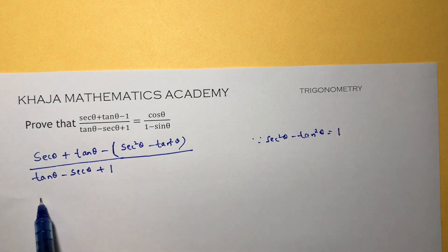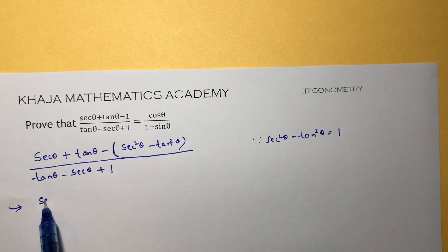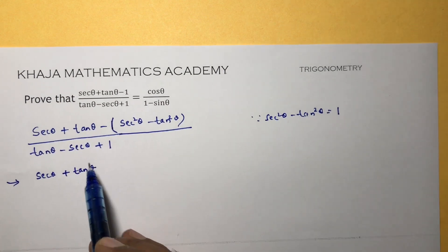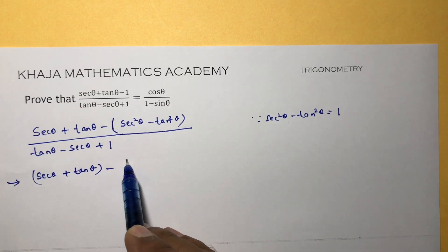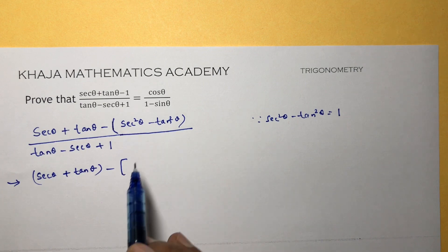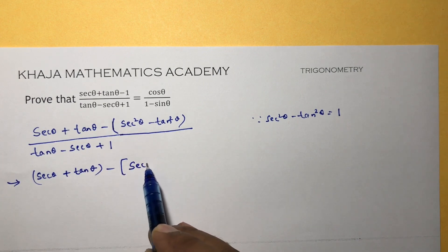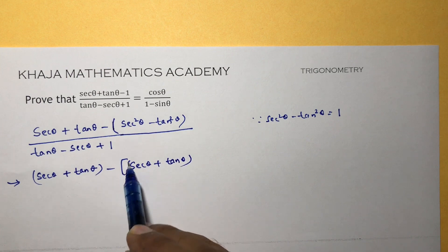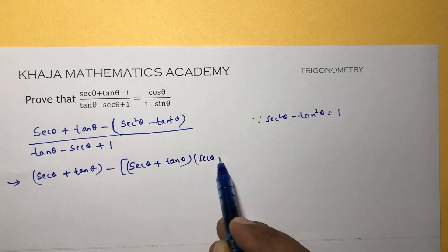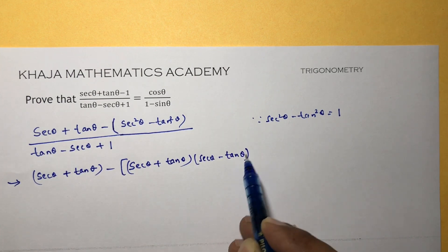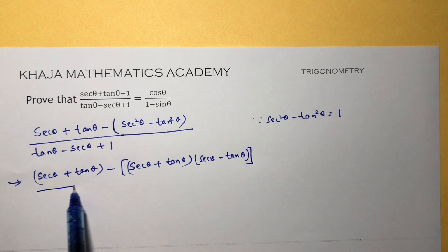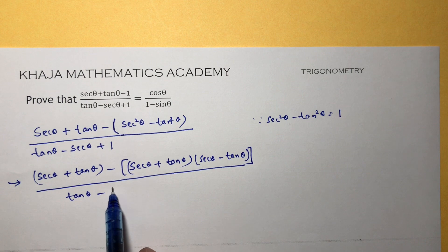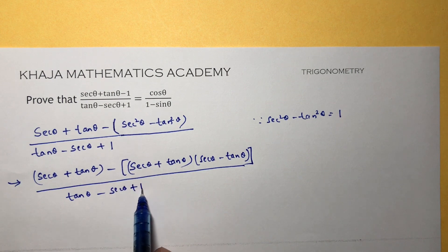Now the numerator sec θ + tan θ minus (sec²θ - tan²θ) is in the form a² - b², so we factor it as (a + b)(a - b). That gives (sec θ + tan θ)(sec θ - tan θ), all over tan θ - sec θ + 1.